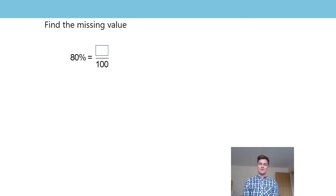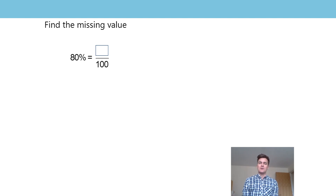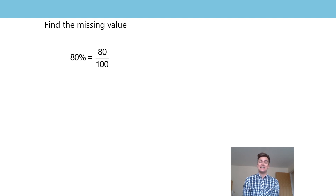Which value is missing? Press pause and write it down, or call it out to me. Which value is missing from that fraction? On three — one, two, three. Good. 80. 80% is equivalent to 80 hundredths. You say it: 80% is equivalent to 80 hundredths. Say it again.